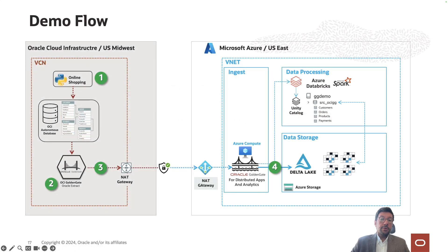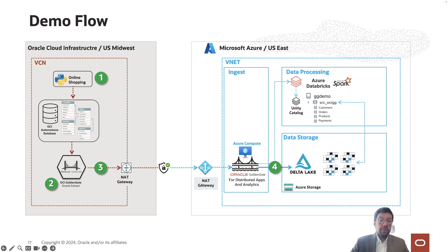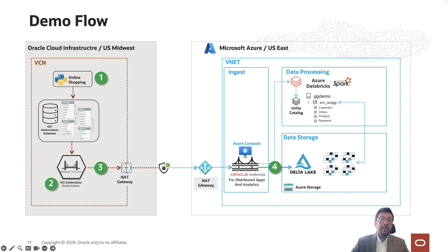This is our demo flow. I have a Python code which represents an online shopping application as the source system. The online shopping application writes operations into four different tables in an OCI Autonomous Database. There's a GoldenGate extract process running on OCI that captures change data events from those tables. I also have a GoldenGate for Distributed Applications and Analytics deployment running on an Azure compute instance, which receives change data events and writes them into Databricks data tables stored in ADLS.